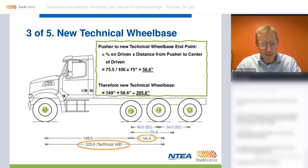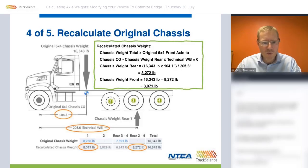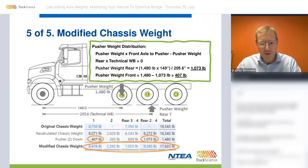In step three, we calculate the new technical wheelbase by applying the ratios determined in the previous step. Step four, we recalculate the original chassis weight — assuming just the 6x4 chassis, taking turning moments about a point to redistribute the weight over the front and all the rear axles. In the final step, we add the pusher axle and distribute it to the front and the rear to give us our new modified chassis weight.